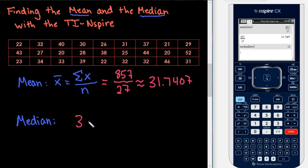So, what the calculator did was it went through and arranged all of my values in order from smallest to largest and then found the very middle number.